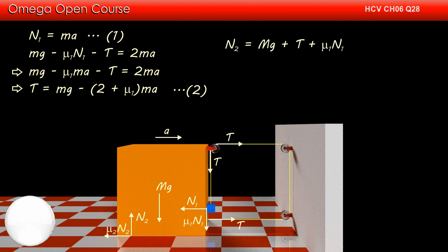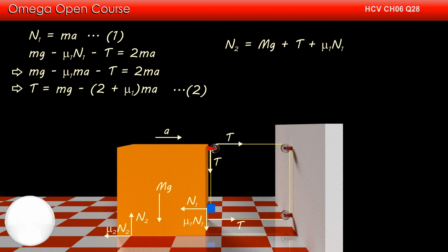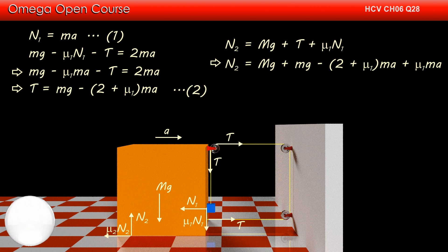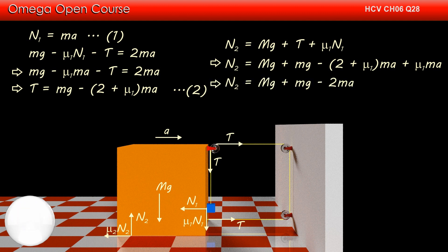Balancing the forces on the bigger block in the vertical direction, we get N2 = Mg + T + mu1·N1. Putting the values of T and N1, we get N2 = Mg + mg − (2 + mu1)·mA + mu1·mA. Simplifying, we get N2 = Mg + mg − 2mA.